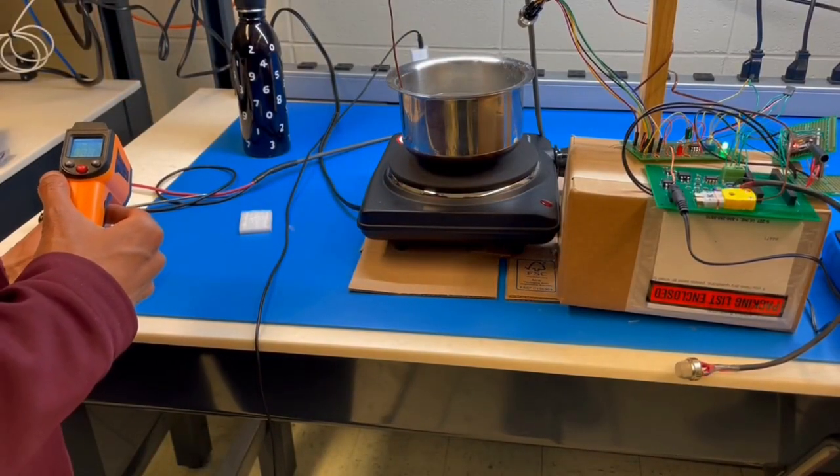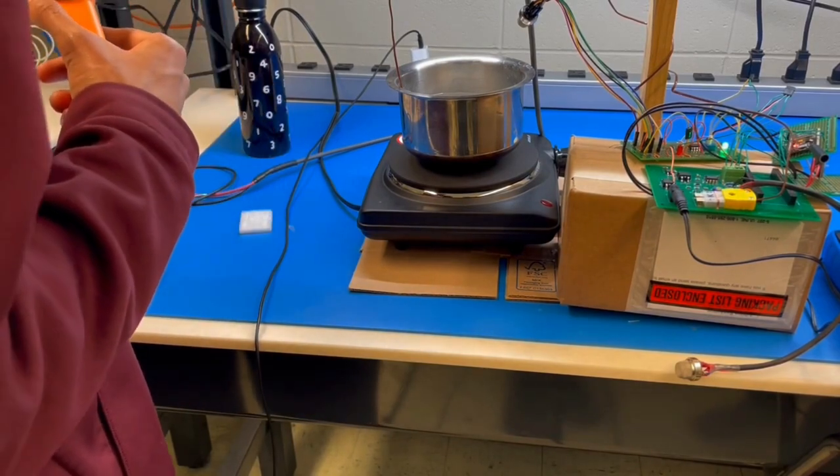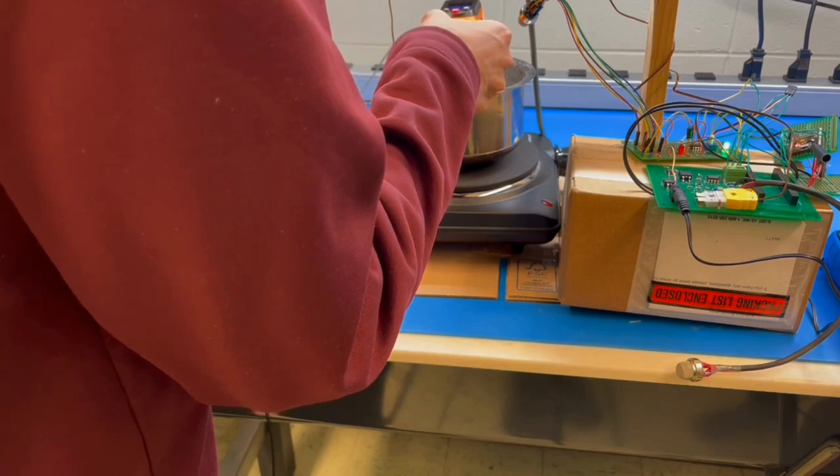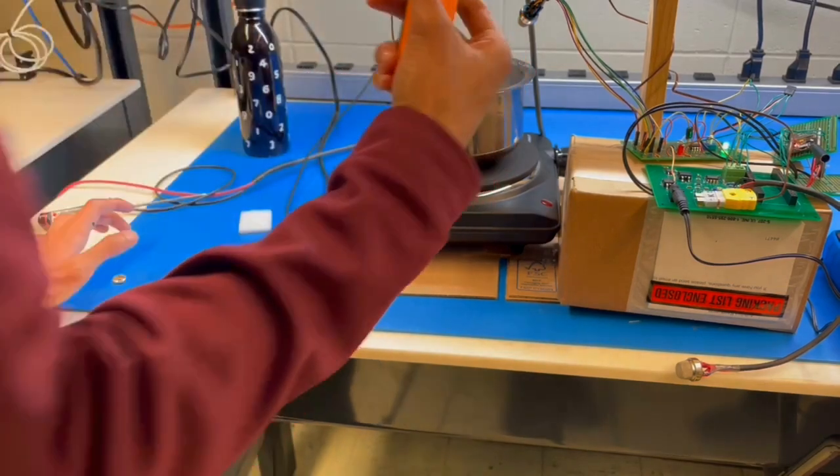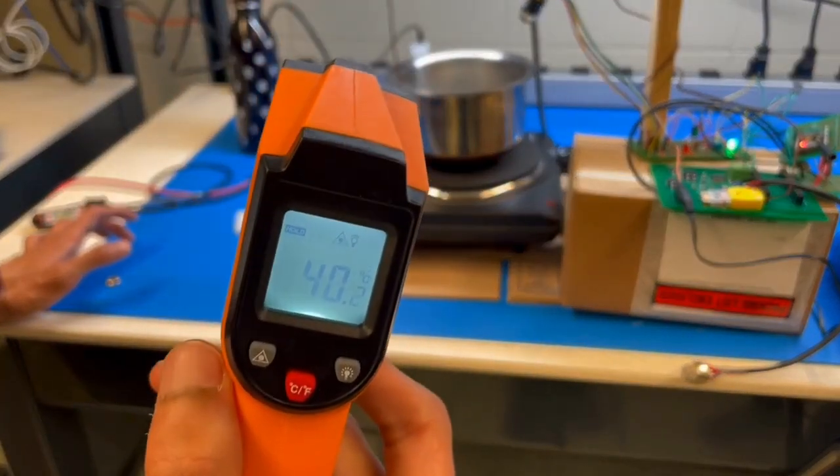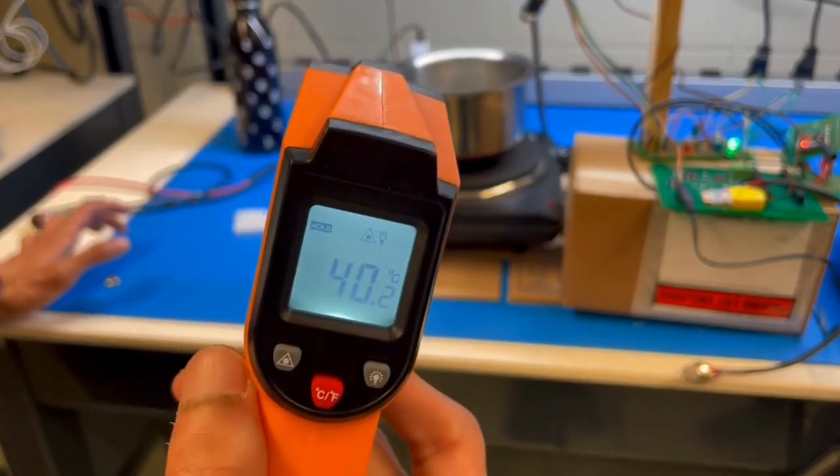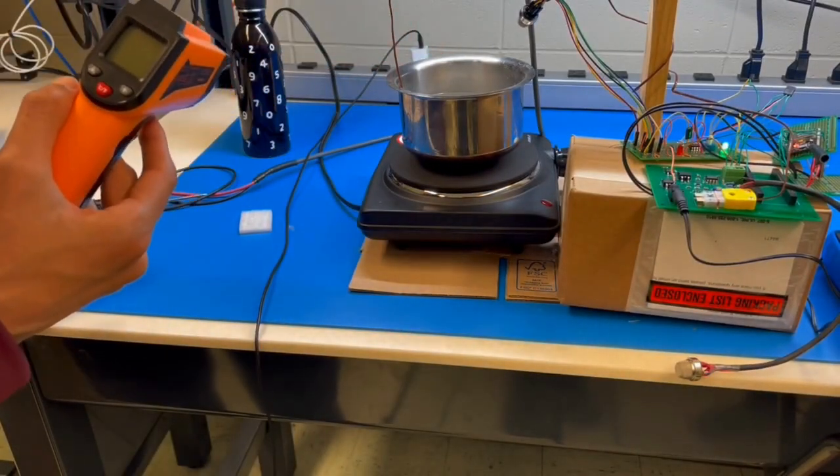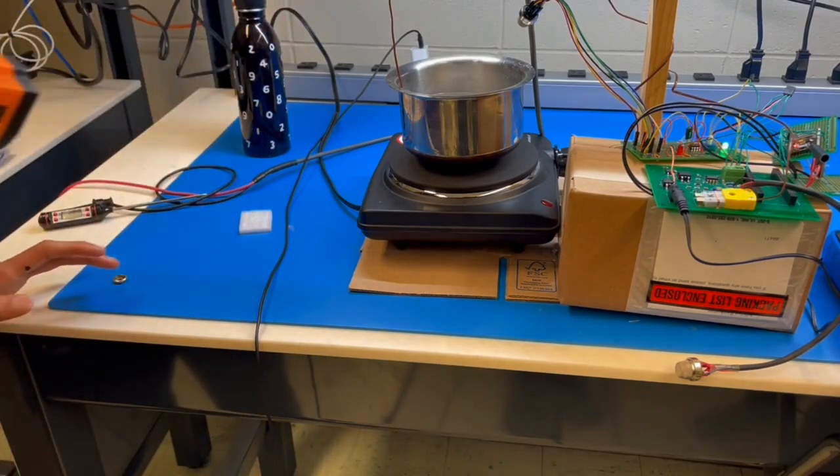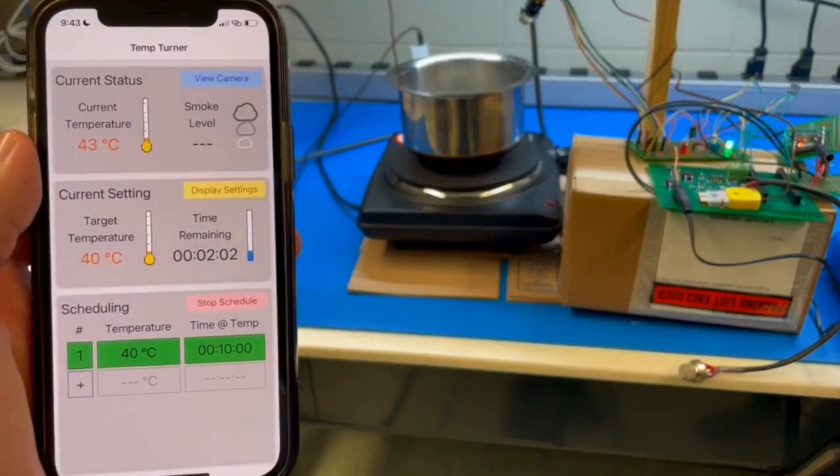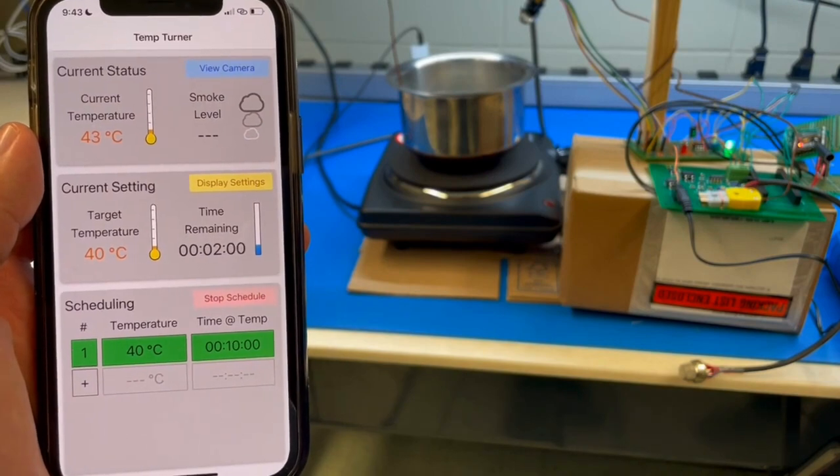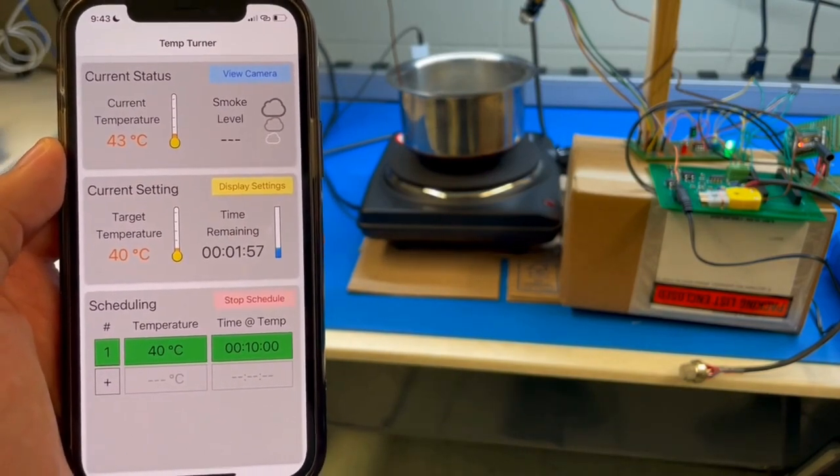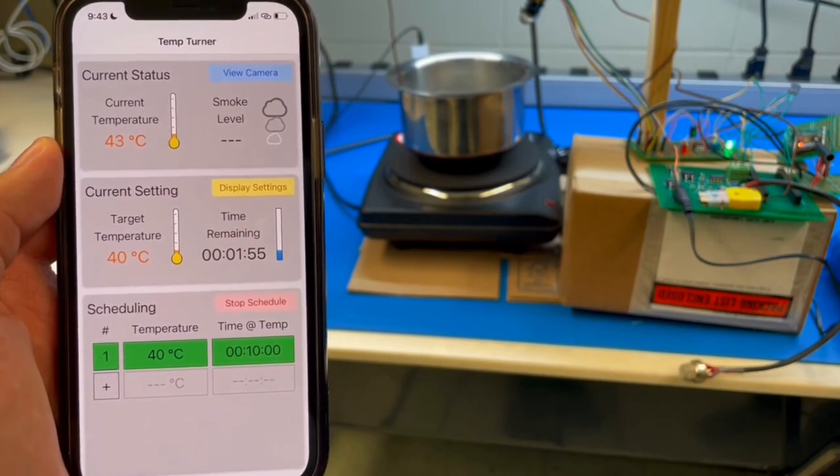We've reached the last scheduled temperature and the water is almost at 40 degrees Celsius. The IR thermometer shows a reading of about 40.2 degrees Celsius. The smoke detector, as seen here, continues to remain off. Let's now see what the app shows. The app also shows a similar value of about 43 degrees Celsius, and the red LED on the app also continues to be off.